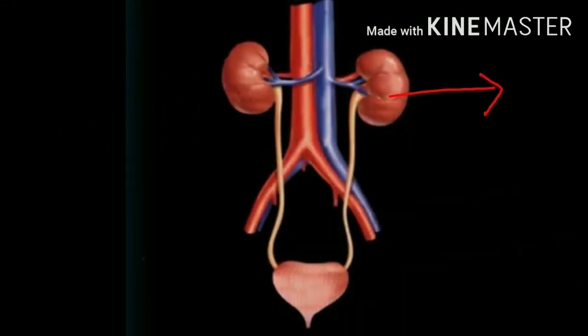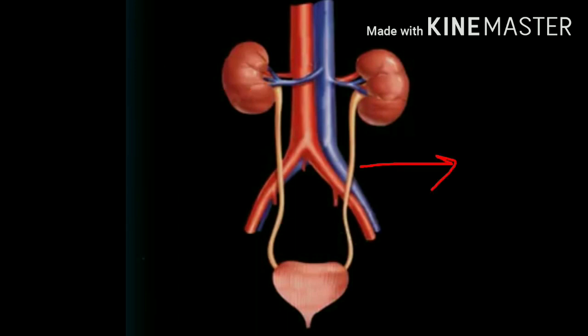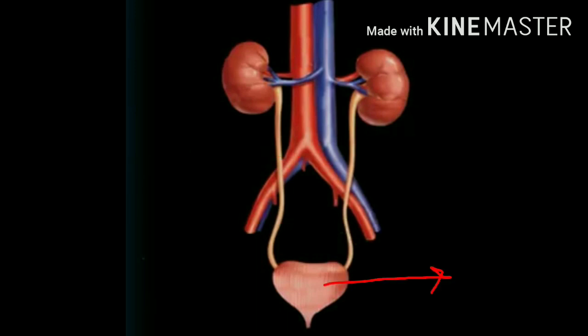This is the left kidney and this one is the right kidney. Here is the left ureter arising from the left kidney and the right ureter coming out of the right kidney. This is the muscular urinary bladder where both the ureters enter. This is a small tube called the urethra.